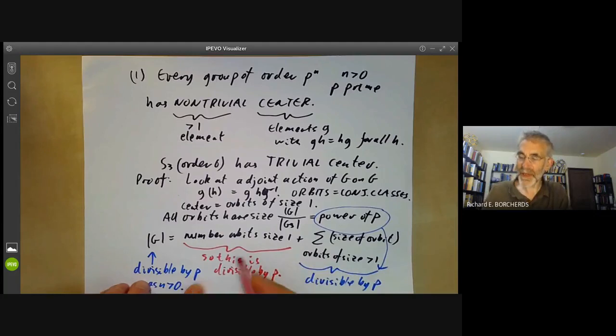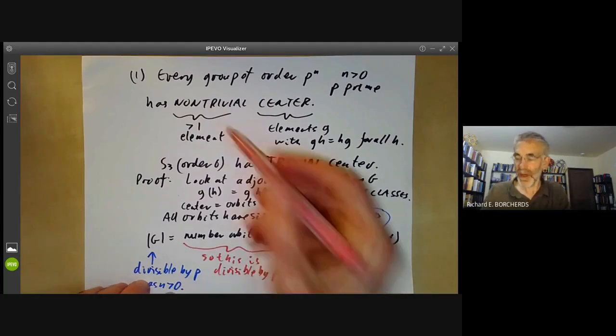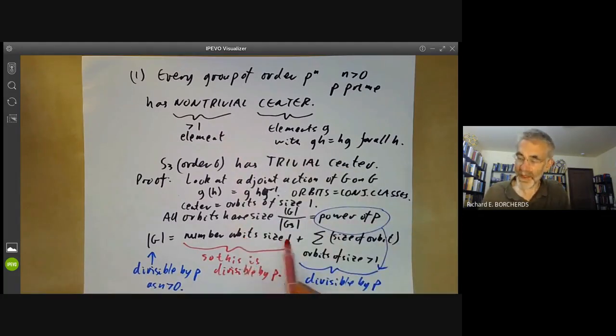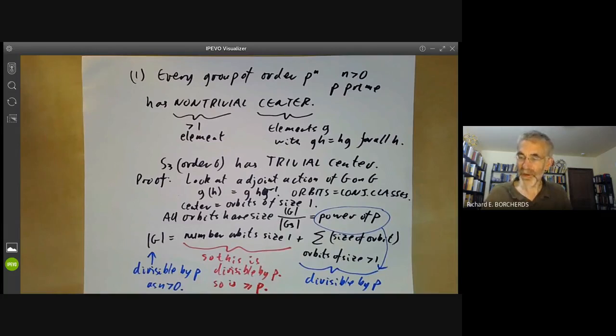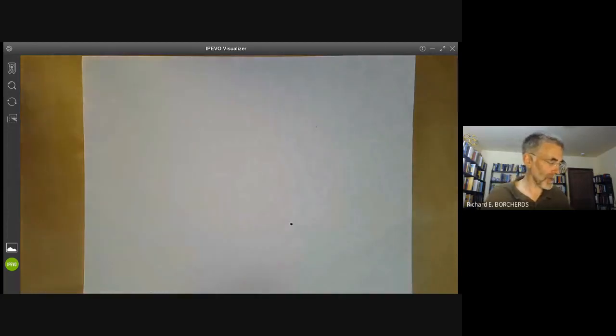So this is divisible by P. Well, it must be at least one because we've got the identity element in it, so is at least P in size. So we've shown that every group of order P to the end has a non-trivial centre. The centre must have at least P elements in it. So that's the first result we need.